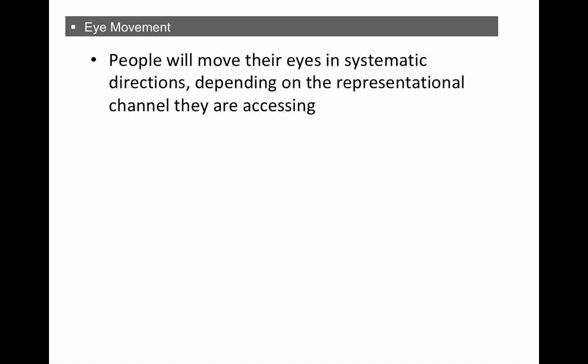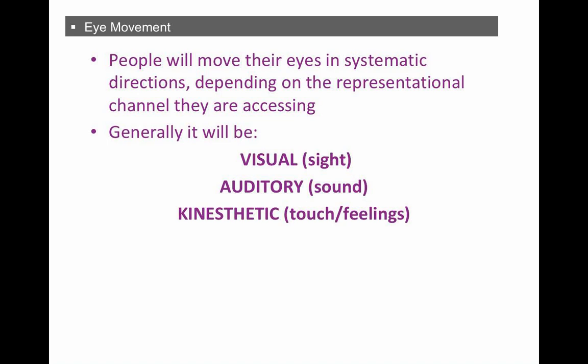They may be thinking about what they're going to say or how they're going to say it. So the eye movement, generally people move their eyes in a systematic way in specific directions when they're recalling information or they're making information up. So generally, it will be, as we've said, visual, auditory, kinesthetic, sight, sound, touch, and feelings. And here are what we call eye accessing cues.